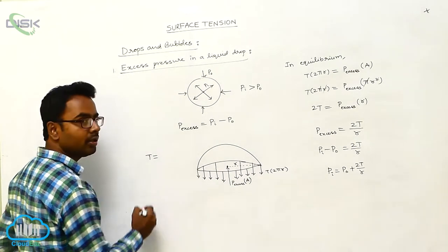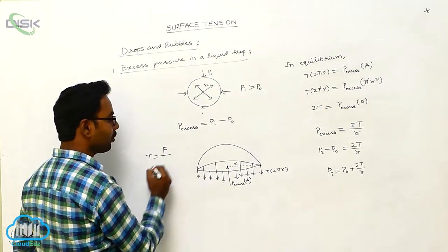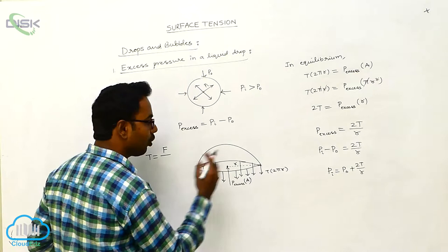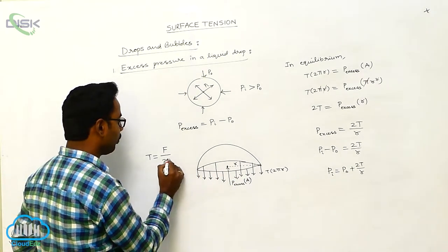Now according to surface tension formula, surface tension is equal to force by length. The downward force suppose is F and it is acting along the length circumference of the drop that is 2πr.